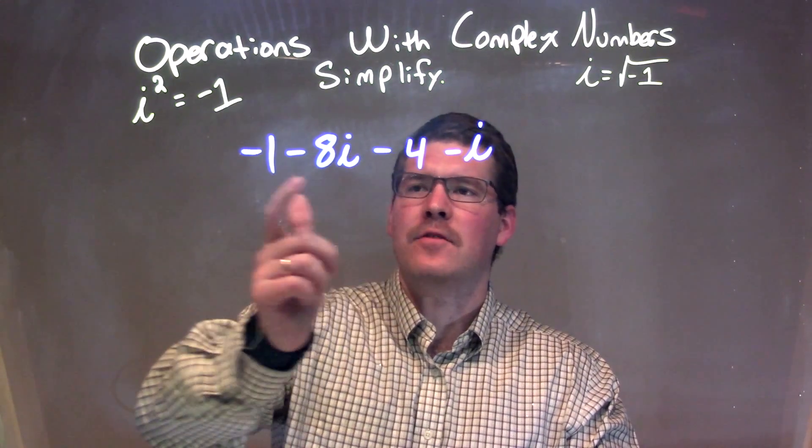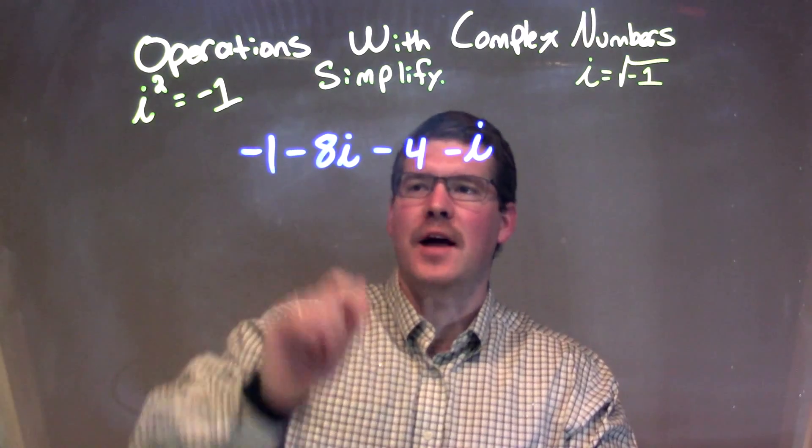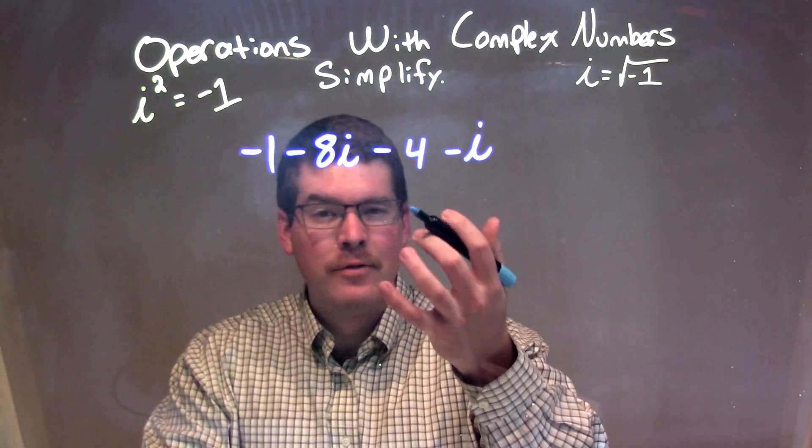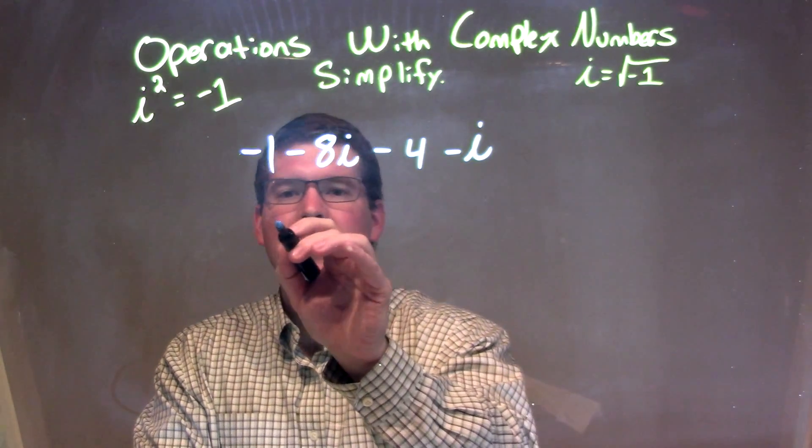We have minus 1 and minus 4. We can combine these two together, so negative 1 and negative 4 combine to be negative 5.